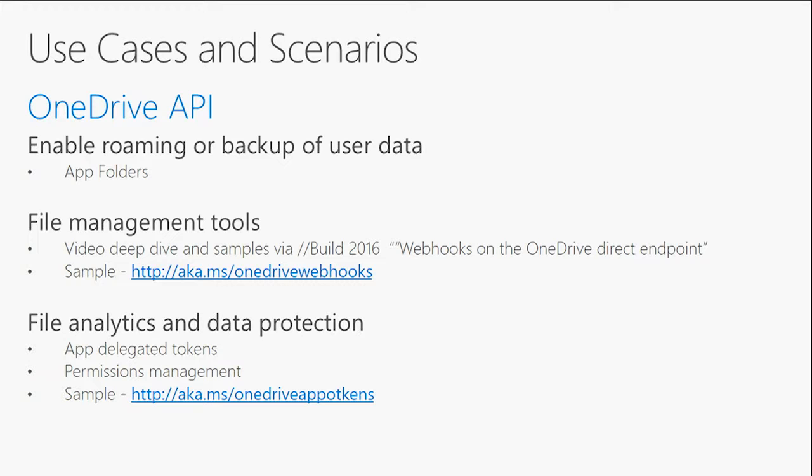Finally, you can build file analytics and data protection tools. These are typically enterprise-level apps that take action on a set of users' OneDrives and perform delegated file management tasks, typically for data protection, compliance, or auditing purposes. To leverage this, the OneDrive API supports access to app-delegated tokens, which are getting simpler as we move forward, and permissions management that helps enable these types of applications. You can find a sample explaining app-delegated tokens linked in this video.